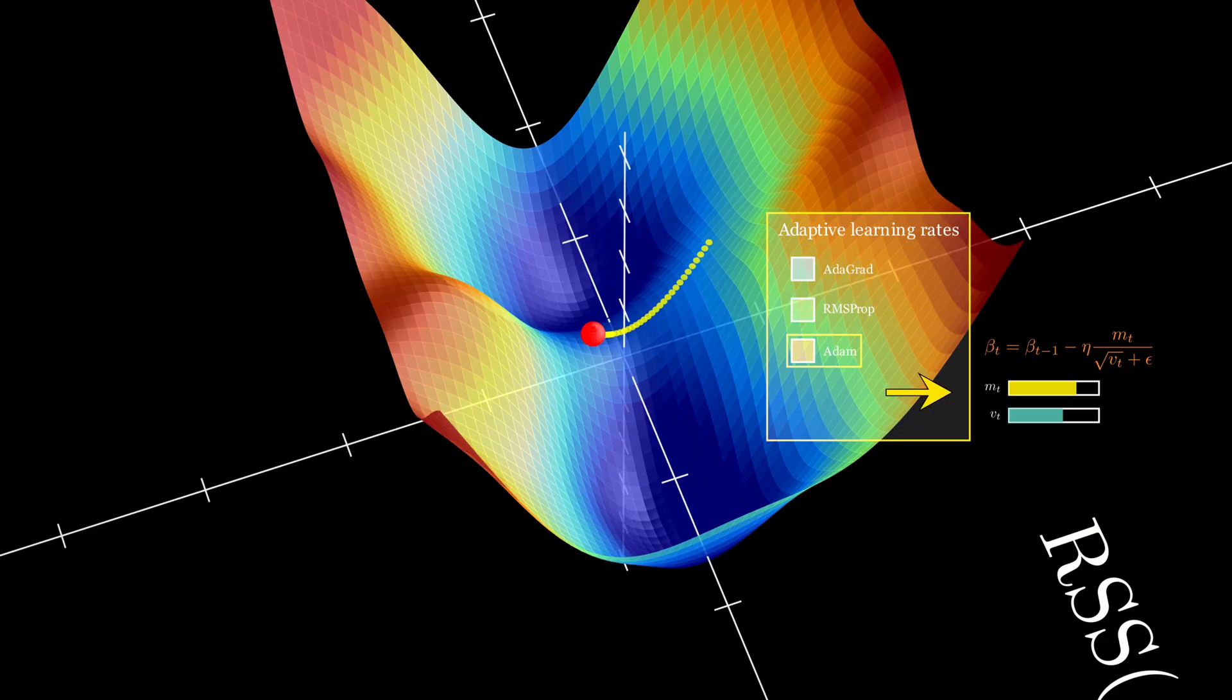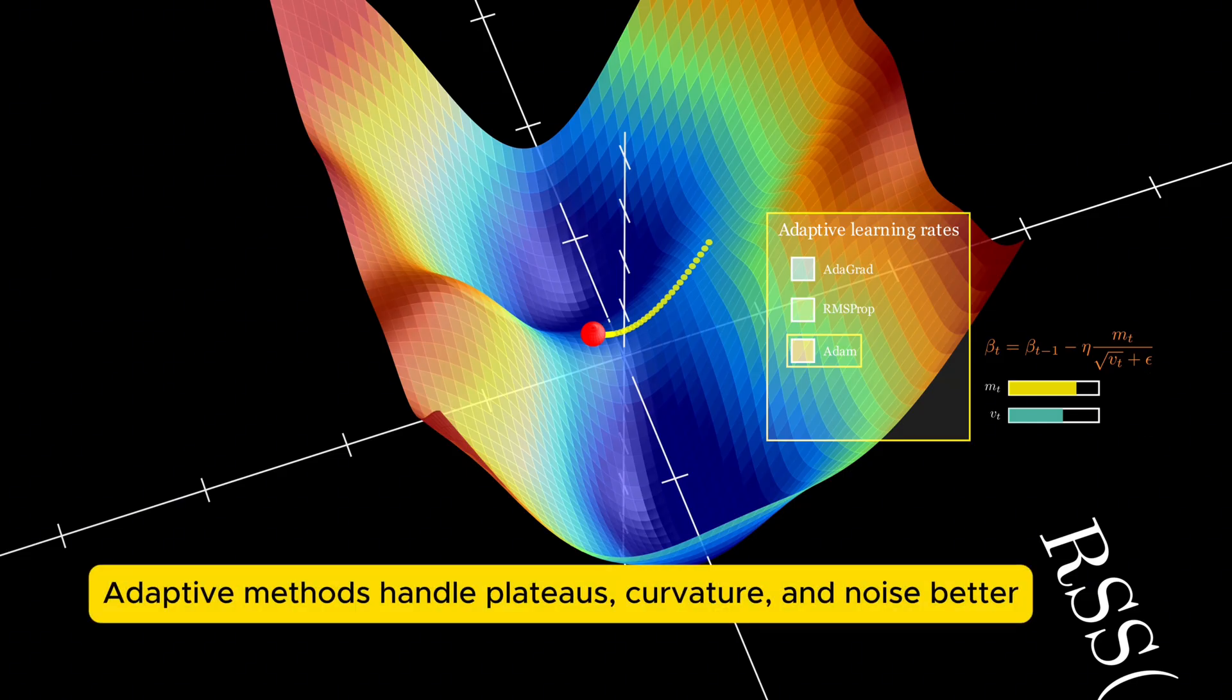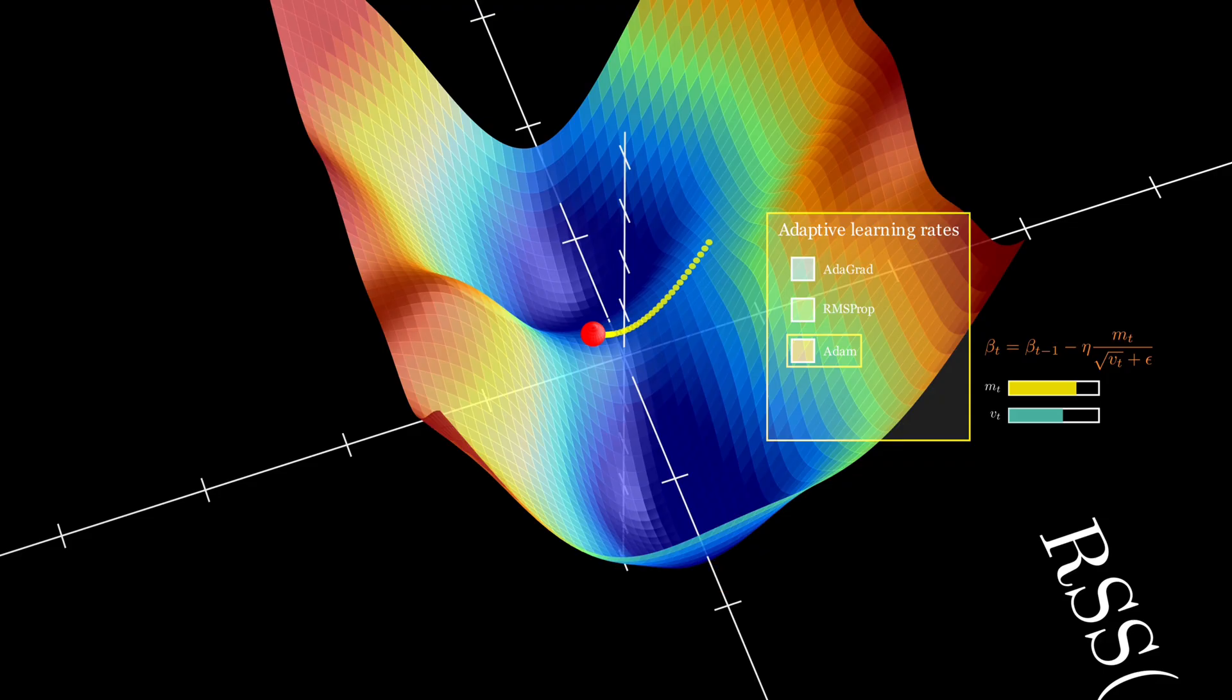Where mt is the exponential moving average of the gradient, vt is the exponential moving average of the squared gradient, and epsilon is a small constant to prevent division by zero. These optimizers are robust to noise, and they handle plateaus and sharp curvatures better than basic gradient descent.